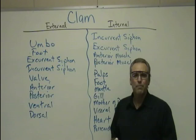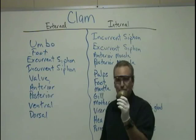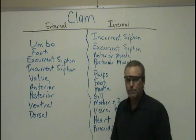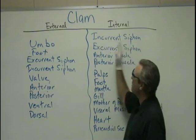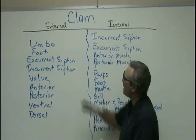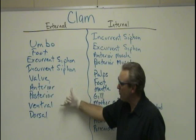Today we're going to dissect the clam. It's in the phylum mollusca. We're looking at a number of different molluscs in class, but we're going to be looking at the clam — the clam that we love around clam chowder. It's not only a fun organism to dissect, but a tasty one. We're going to divide it up by external and internal. The external things we need to look at include the umbo, foot, incurrent siphon, excurrent siphon, valve, anterior, posterior, ventral, and dorsal. You should know those.